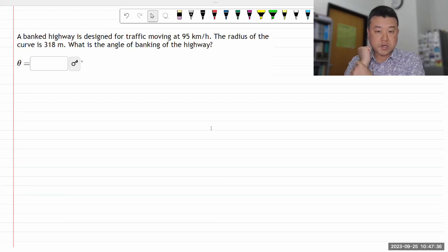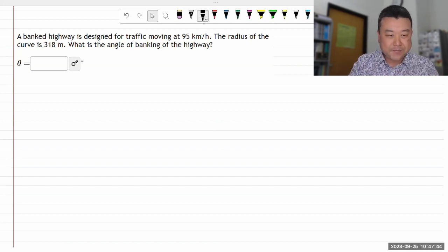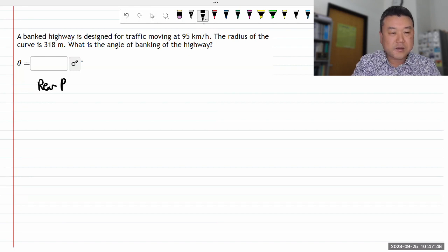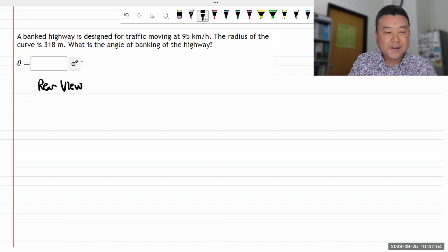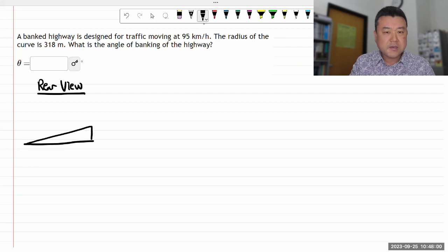Okay, let me do this question. It says a banked highway. Alright. So it says it's banked. That must mean if we are looking at the back of the car and looking at a cross section of the road, it must have a view that looks like this. So it's some sort of a banked highway.